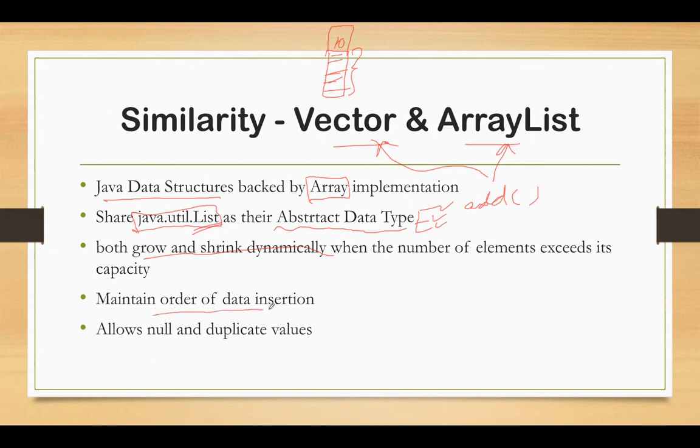Both of them maintain the order of data insertion. If we have an ArrayList or a Vector, it will maintain the order of insertion. In this case, the very first element on top of this array is zero, so it will always be zero followed by the numbers that we have inserted in order. Both of them allow null and duplicate values in their list. All these things are supported by both Vector and ArrayList.